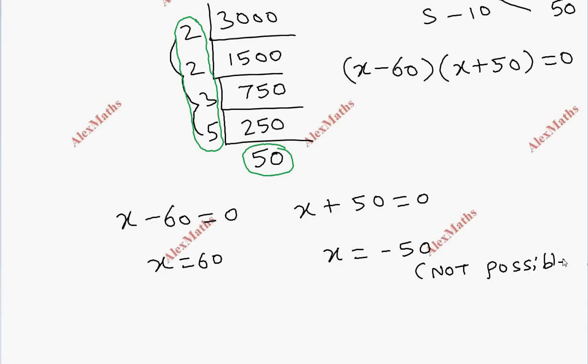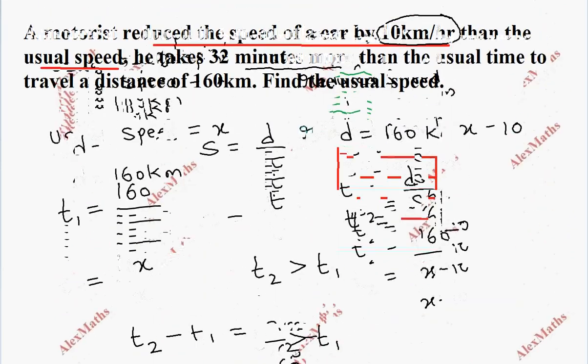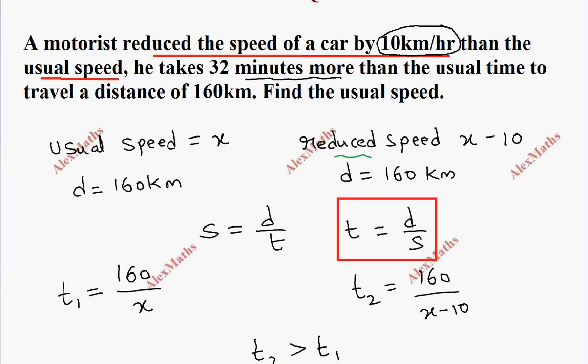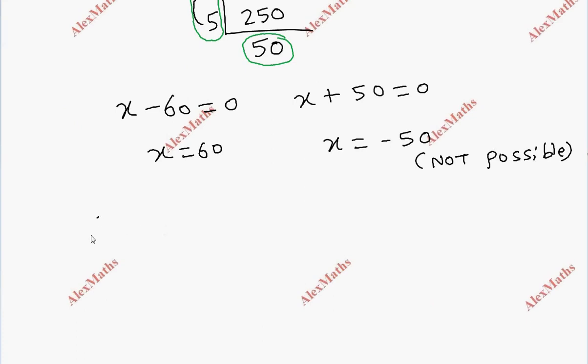We found x equals 60. The question asks for the usual speed, which is x. Therefore, the usual speed is 60 kilometers per hour.